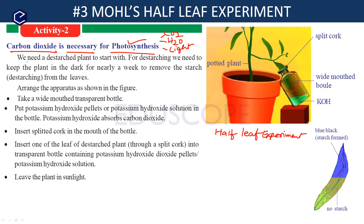For this experiment, we need a de-starched plant. What is a de-starched plant? A plant in which there is no starch stored is called de-starched. Generally, plants kept in sunlight produce starch in their leaves — starch is a type of carbohydrate. For de-starching, we need to keep the plant in the dark for nearly a week. After one week in the dark, the starch is removed from the leaves. Take this potted plant.